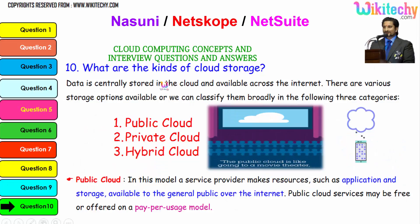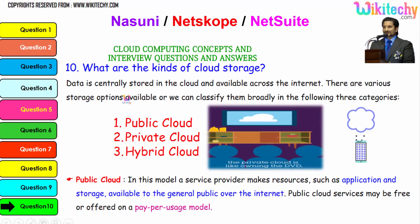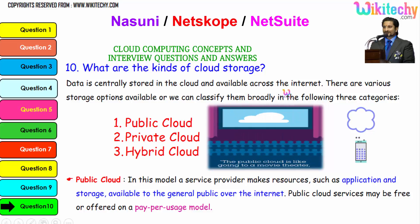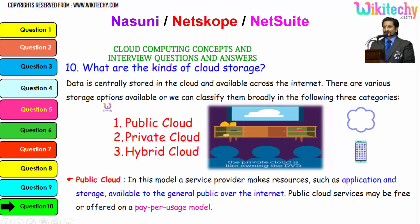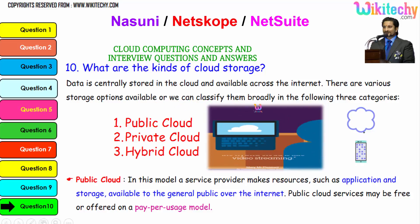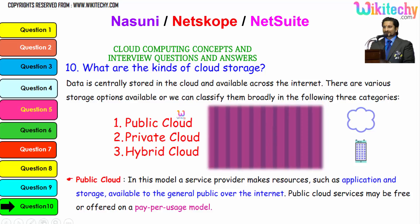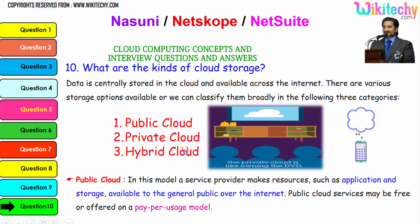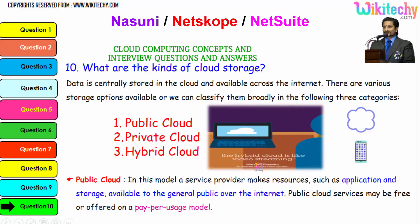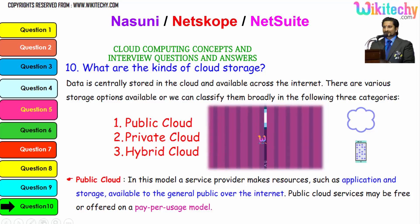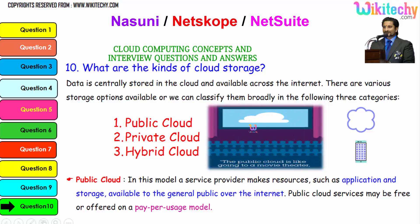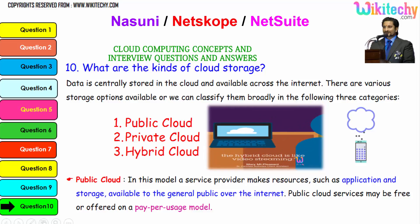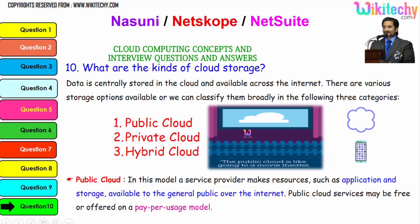Now let's talk about the kinds of cloud storage. Data is centrally stored in the cloud and available across the internet. There are three major storage options, broadly classified as: public cloud, private cloud, and hybrid cloud. You can see the animated visuals here. Public cloud is like going to a movie theater, private cloud is like owning a DVD at home, and hybrid cloud is like video streaming — a mix of private and public.